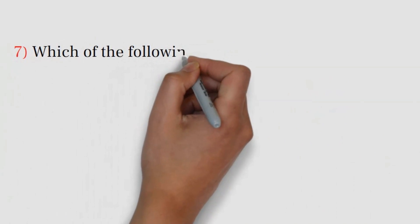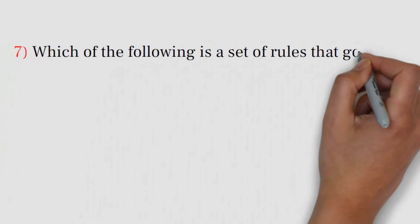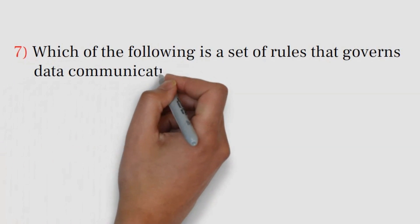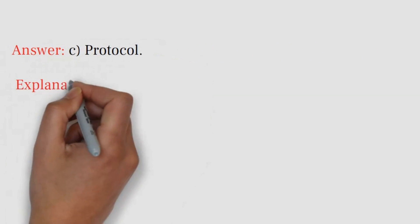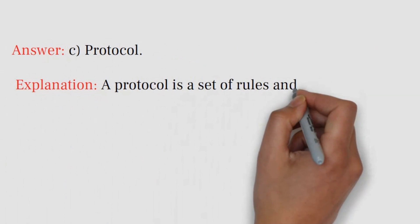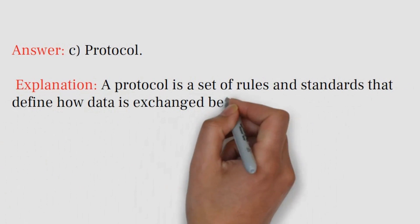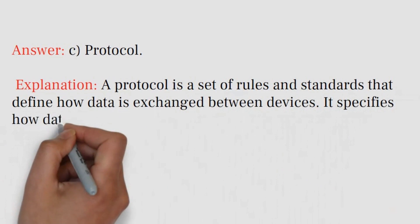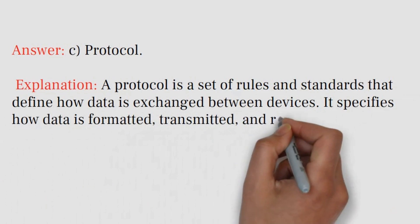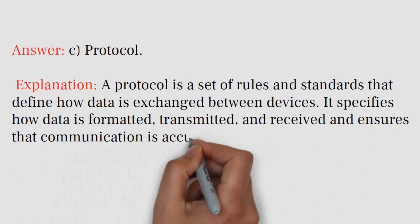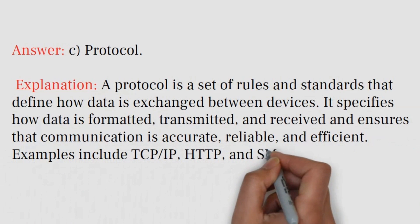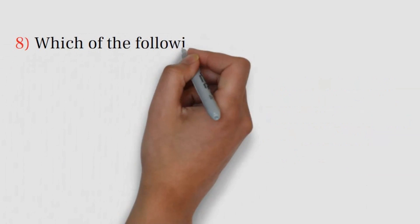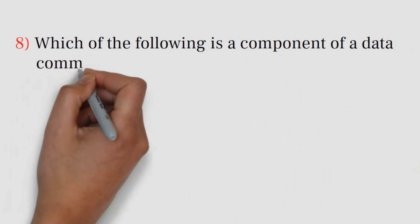Question number seven: Which of the following is a set of rules that governs data communication? A) Data, B) Signals, C) Protocol, D) Signaling. Answer: C) Protocol. Explanation: A protocol is a set of rules and standards that define how data is exchanged between devices. It specifies how data is formatted, transmitted, and received, and ensures that communication is accurate, reliable, and efficient. Examples include TCP/IP, HTTP, and SMTP.